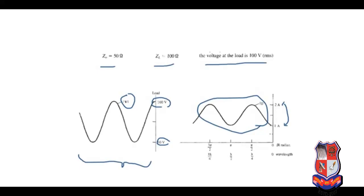As and when voltage is maximum, current is minimum, and so on — this relationship is maintained. At the pi by 2 length on the line, measured as beta times L in radians, the value of current is maximum. Moving one more pi distance, once again the current is maximum, and the cycle continues. We also have the wavelength relationship along with the degree itself.